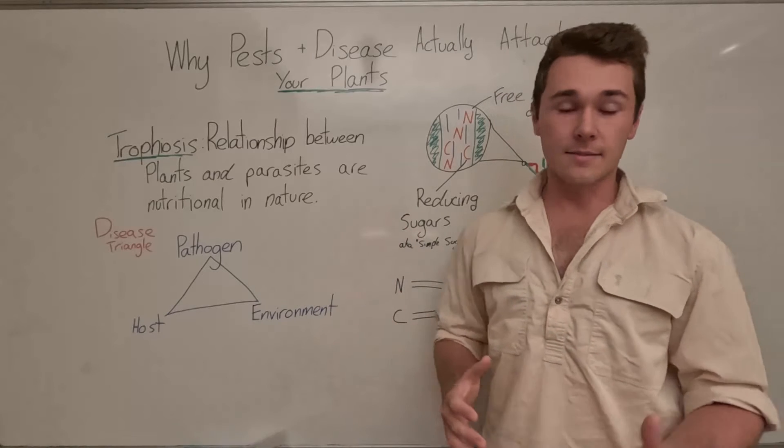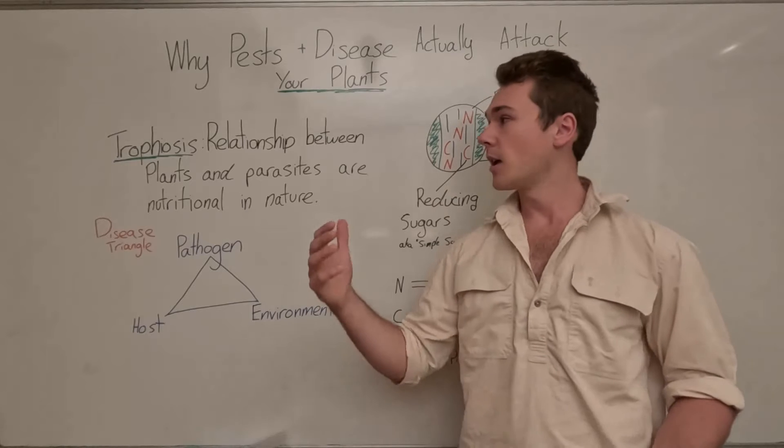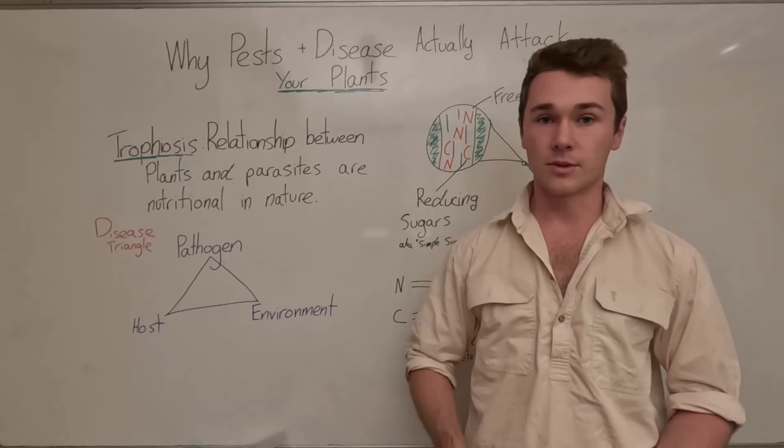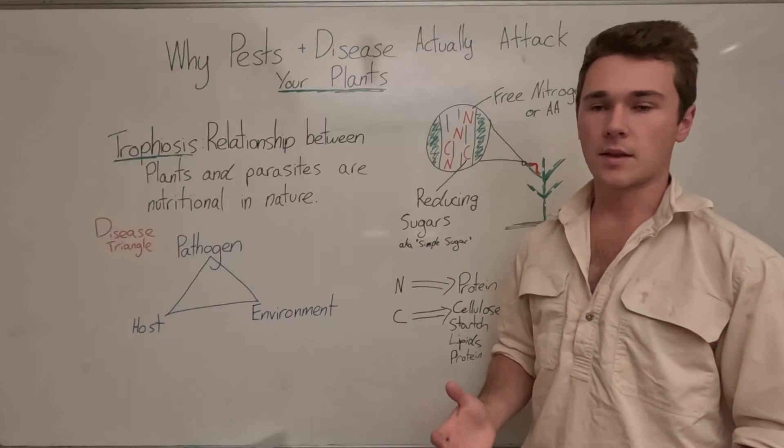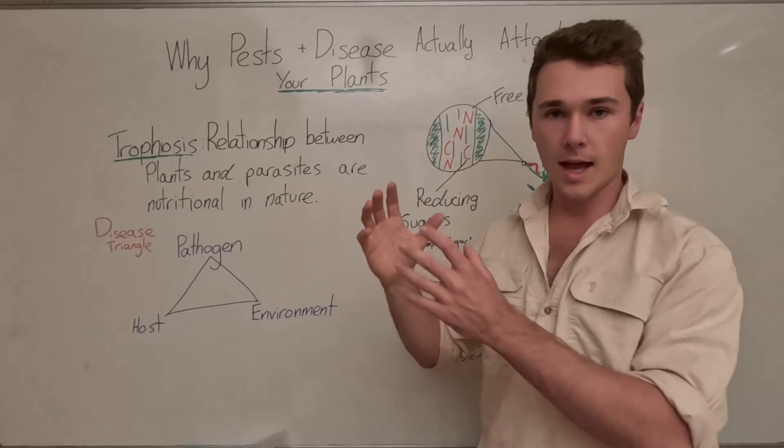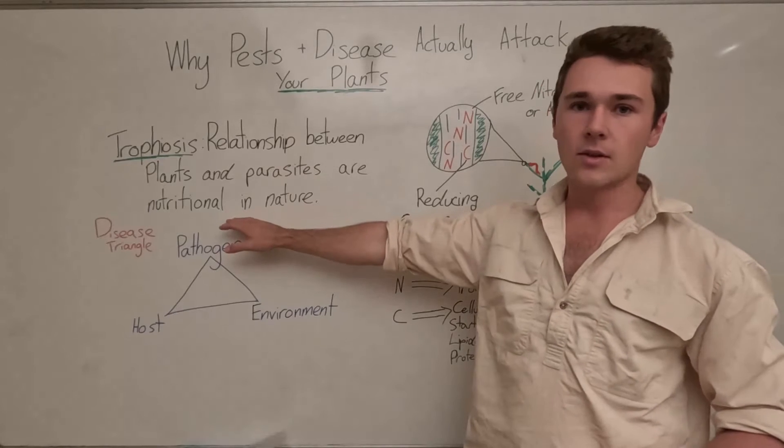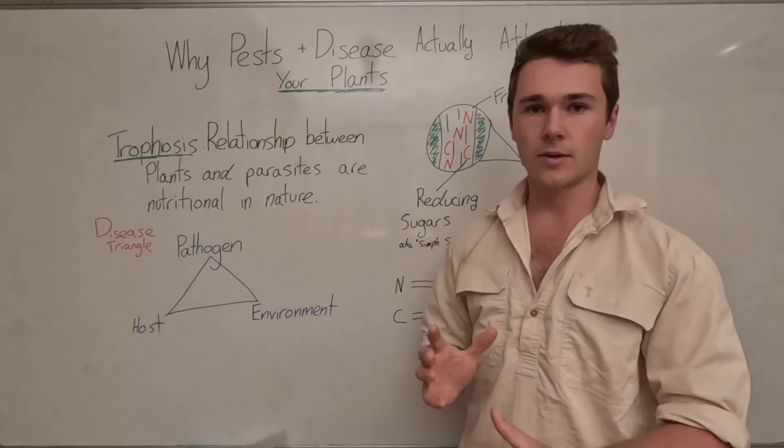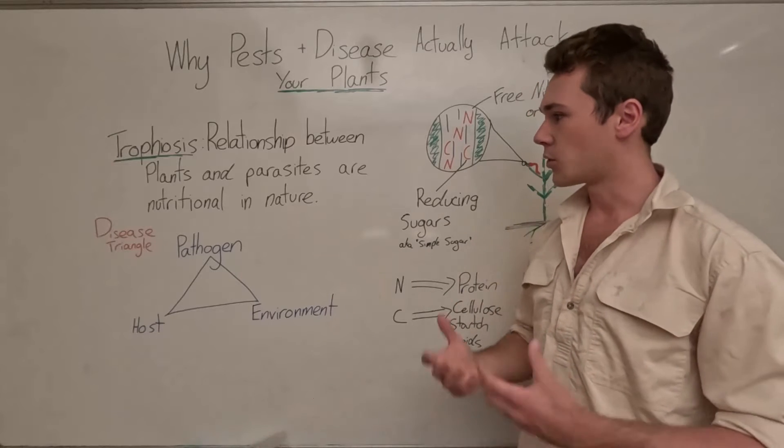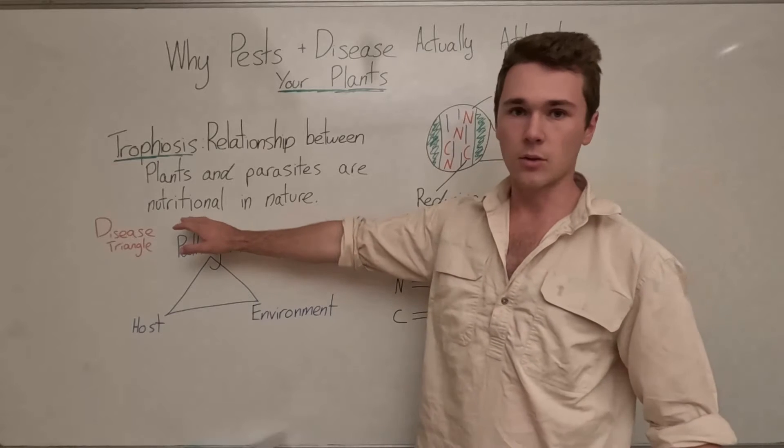So why are disease and pests actually attacking your plants? And this is something that Chaboussou thought about in his research, specifically when he went over to Brazil. And what he developed was a theory of trophobiosis, which is effectively all the relationships between a parasite and a plant are nutritional in nature. So the interaction going on there is simply because the parasite is feeding off the plant, which is quite obvious, but in order to fix this problem, the solution is also nutritional.